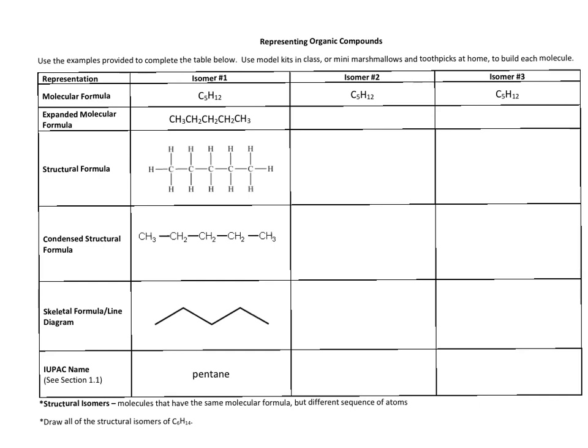So you'll see in the instructions up here that I mentioned using model kits in class—we'll be doing that. I also say here, you know, mini marshmallows and toothpicks—you could work with your own equipment at home to do this also, but we will be doing a model building activity in class for isomer 2 and 3.